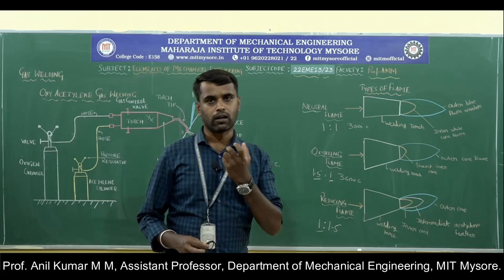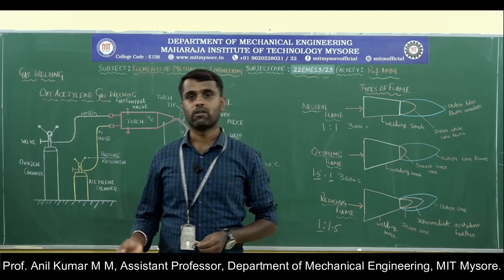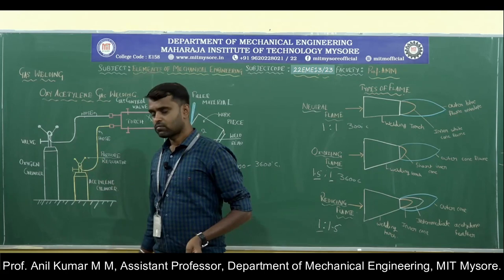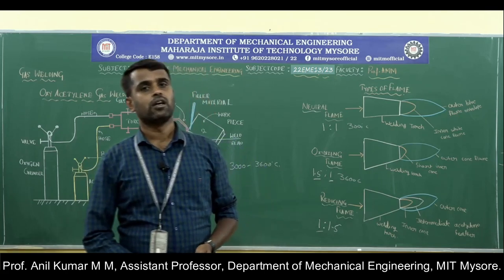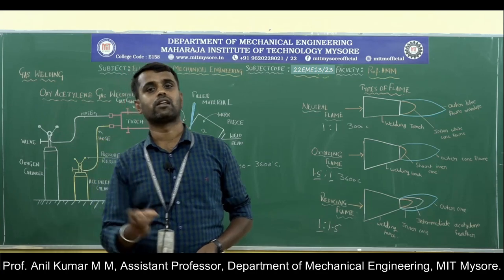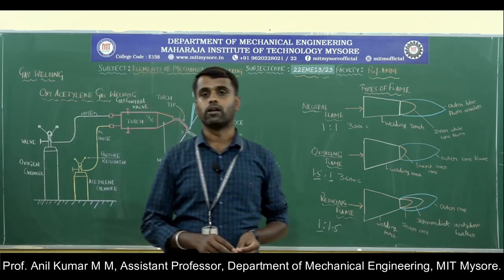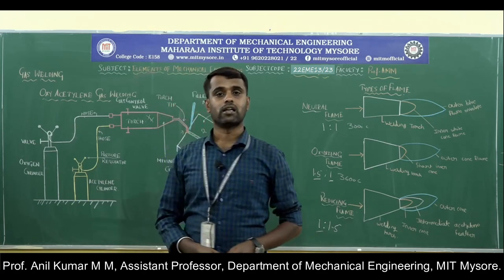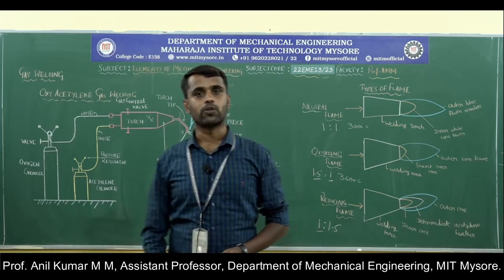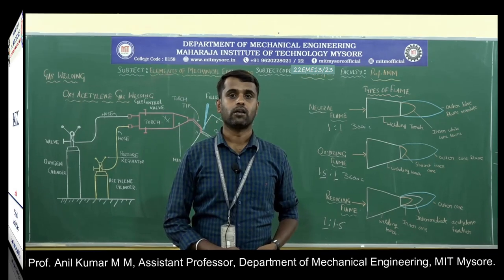Gas welding uses a gas flame as the heat source for heating the edges of the two metal pieces, whereas in arc welding, the electric arc is used as the heat source. I hope all of you understood the electric arc welding, TIG welding process, MIG welding process, and gas welding process. This completes the welding process. In the next session, we are going to discuss another type of joining process — soldering and brazing. Thank you.